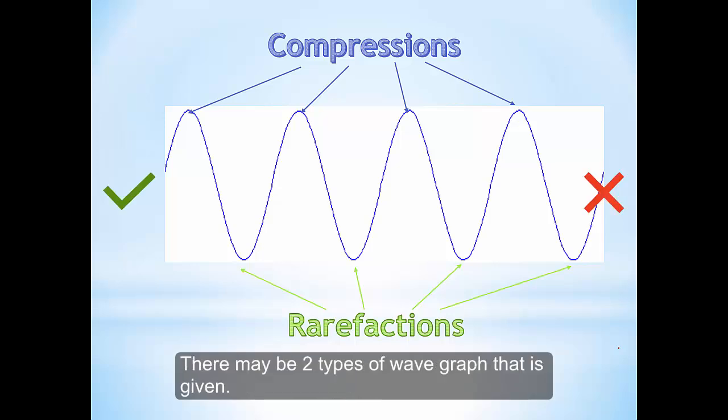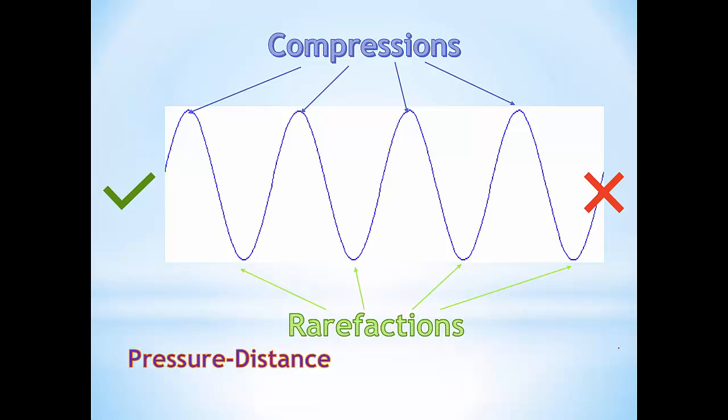There actually may be two types of wave graph that is given. One is a pressure-distance graph, the other is a displacement-distance graph.